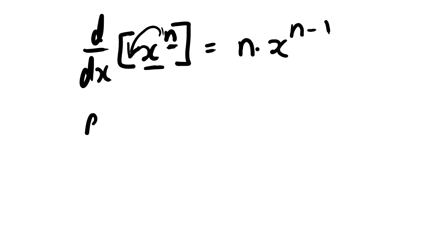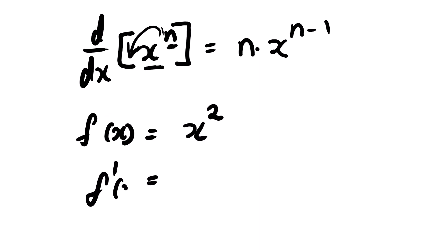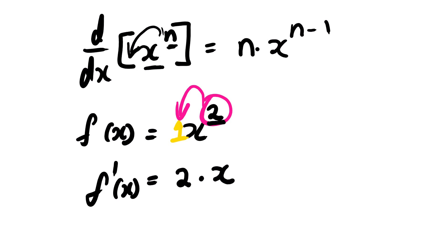Let's say for example we are looking for the derivative of x to the power 2. We take this exponent and multiply by the coefficient of the x variable, which in this case is 1. So 1 multiplied by 2 is 2, multiplied by x, and the exponent becomes 2 minus 1, which is 1.